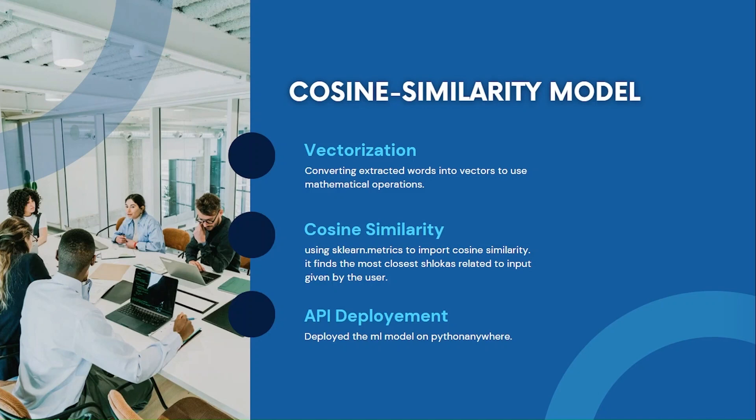After pre-processing the data, we extracted the words and converted them into vector form to perform mathematical operations like cosine similarity. We used the scikit-learn metrics library to import the cosine similarity function, which finds the closest Sloka related to the input given by the user. Finally, we deployed our ML model on PythonAnywhere and created an API endpoint.